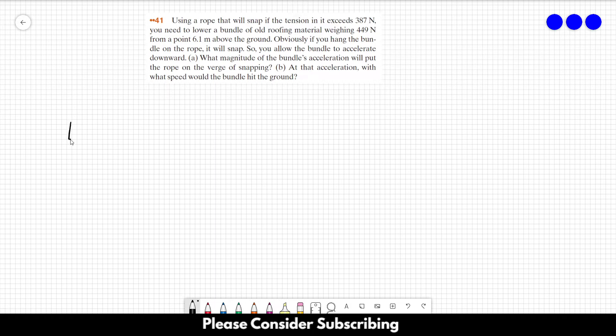So let us draw our bundle, which is just this box over here, and let's draw the forces that act on the bundle. So pointing upwards, we have the tension from the rope, which is equal to 387 newtons. And pointing downwards, we have the force of gravity. So the force of gravity is equal to the weight of the bundle, so Fg is equal to 449 newtons.